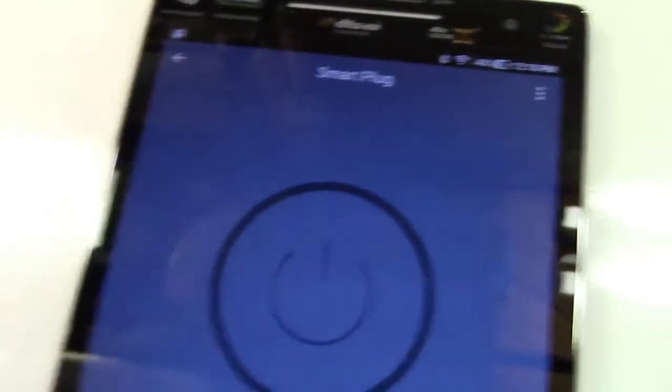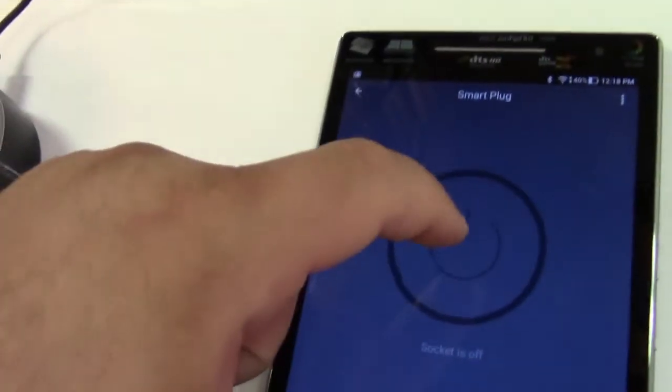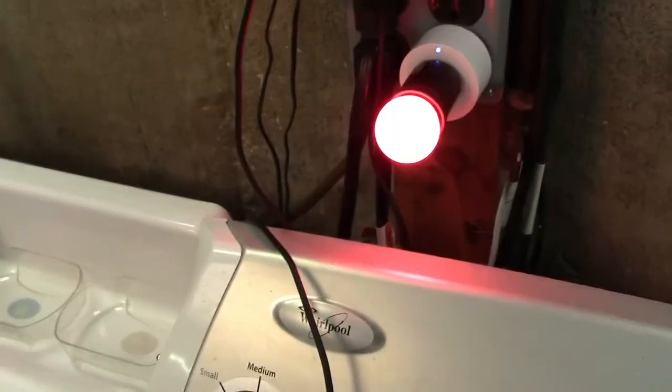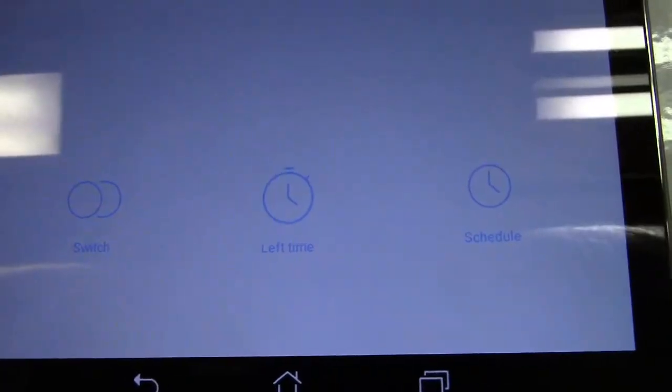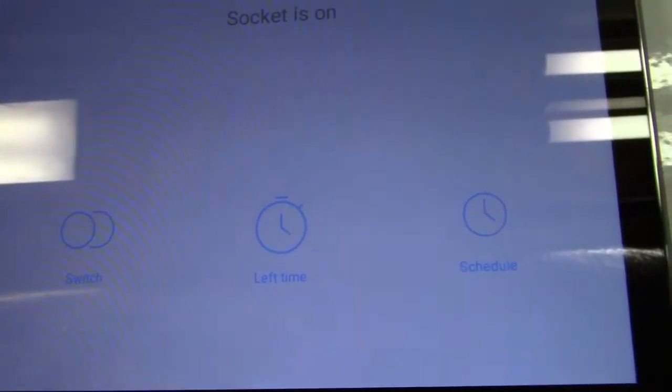And now theoretically we should be able to hit the power button and the light turns on and off. You can hear the click as it does that. You can also set timers and schedules on your device.